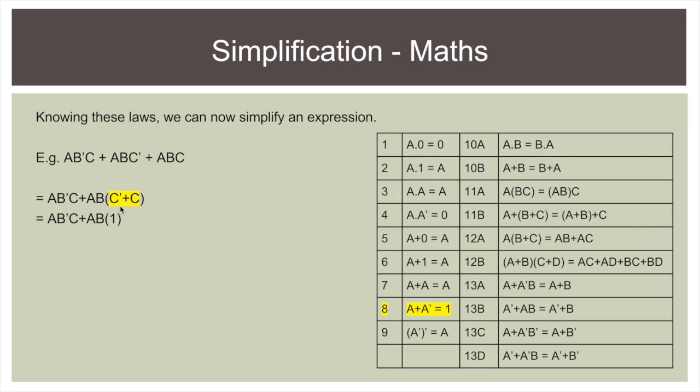We can simplify this bit further because something plus the notted version of itself is 1. So we've got A B times 1. And this simplifies to A B because something times 1 equals the original something.